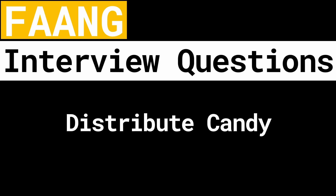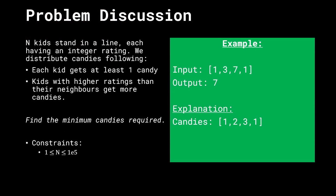Hello everybody and welcome back. Let's talk about the problem 'Distribute Candy'. There are n kids standing in line, each of them having an integer rating associated with them. We have to distribute the candies following two rules: first, each kid gets at least one candy; and second, kids with higher ratings than their neighbors get more candies. The goal is to find the minimum number of candies required to satisfy both rules. The constraints mention that n can be between 1 and 10 to the power 5.